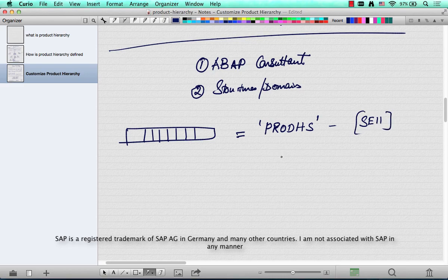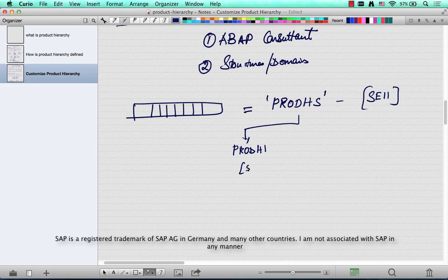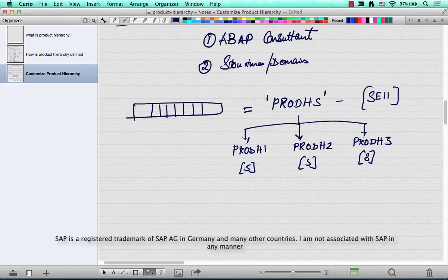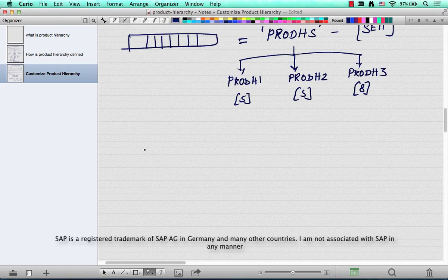The typical out-of-the-box definition is PRODH1, and that is 5 characters, and then PRODH2, P-R-O-D-H-2, that is 5 characters too. And then we have PRODH3, and that is 8 characters. And this is how SAP defines it out-of-the-box.